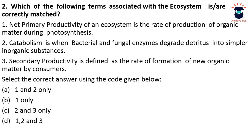The next question: which of the following terms associated with ecosystems is/are correctly matched? First, net primary productivity of an ecosystem is the rate of production of organic matter during photosynthesis. Second, catabolism is when bacterial and fungal enzymes degrade detritus into simpler inorganic substances. Third, secondary productivity is defined as the rate of formation of new organic matter by consumers. Which of the above statements are correct?